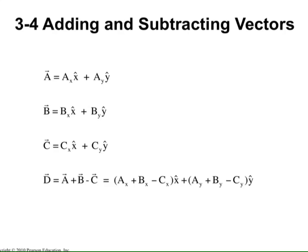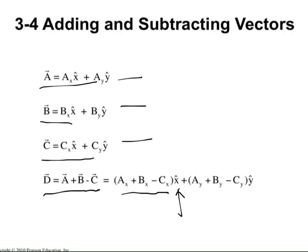An example: vectors a, b, and c are all given in terms of unit vectors — ax·î + ay·ĵ and so on. To find a + b − c, you combine the x-components: ax + bx − cx, and the y-components: ay + by − cy. The resulting vector is again expressed as the sum of two unit vector components.